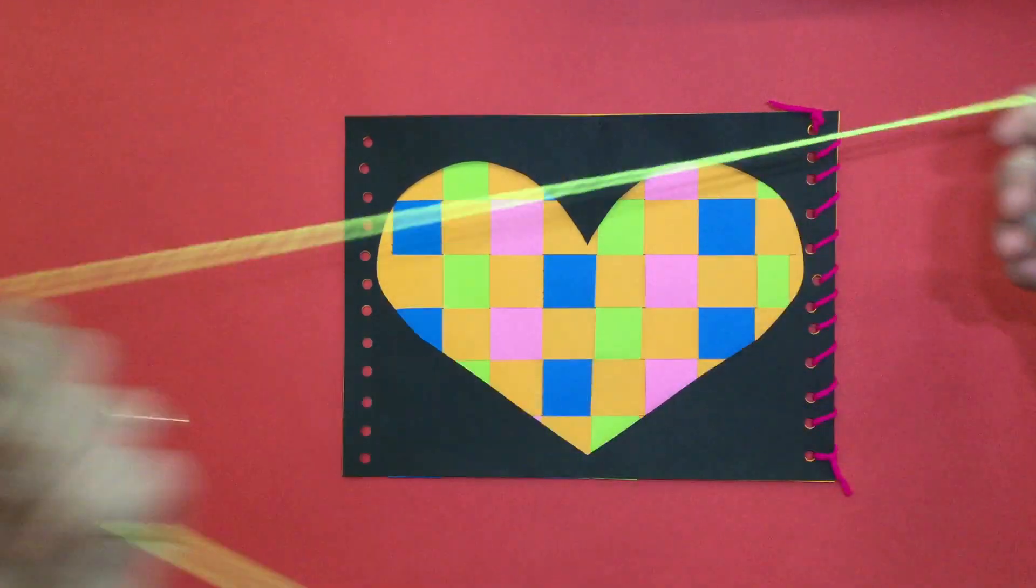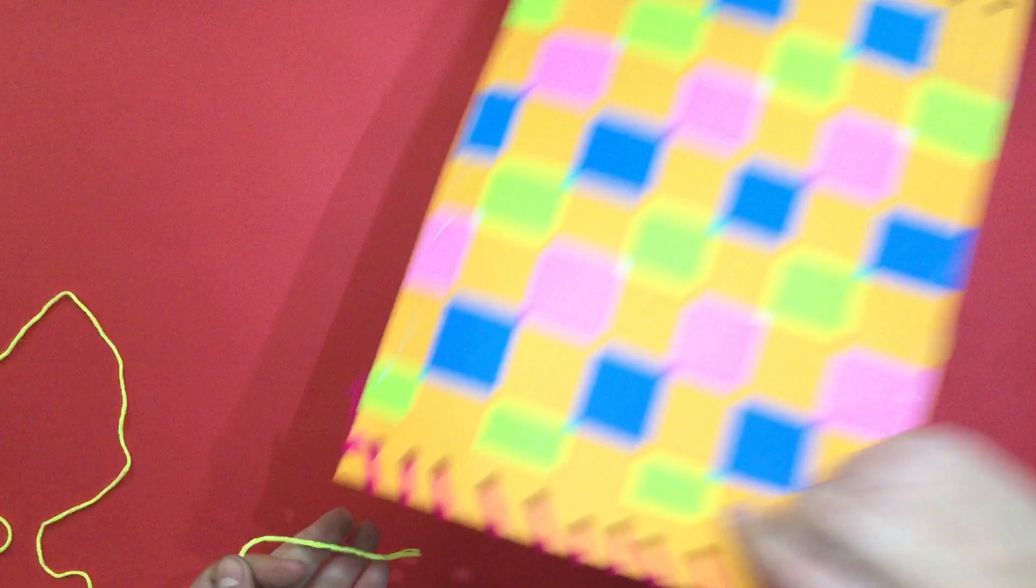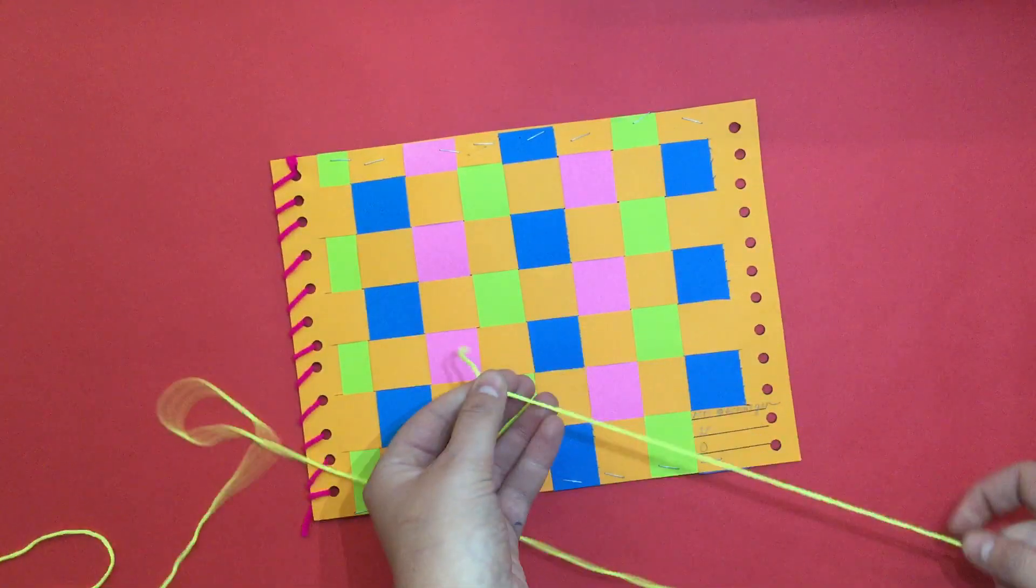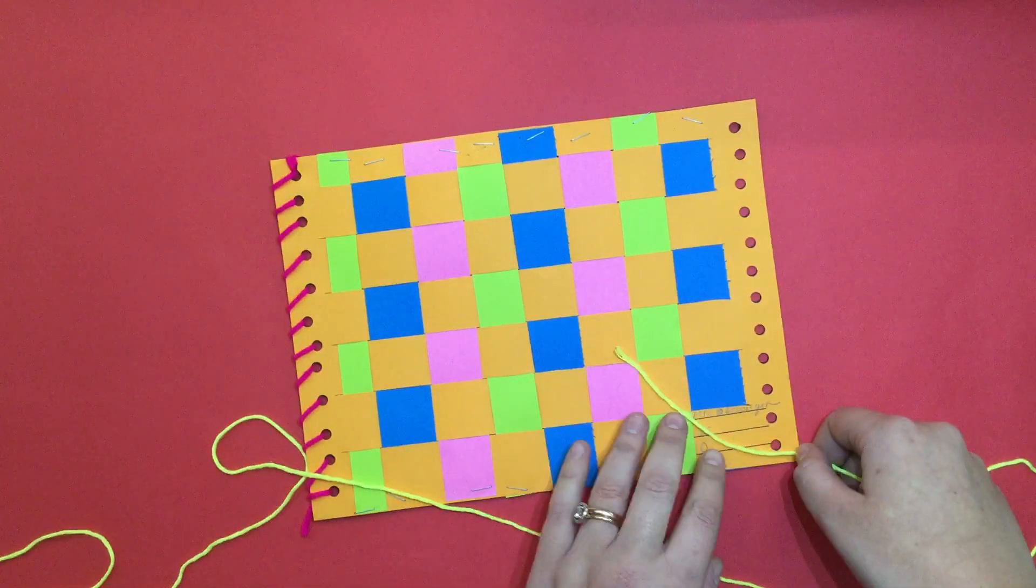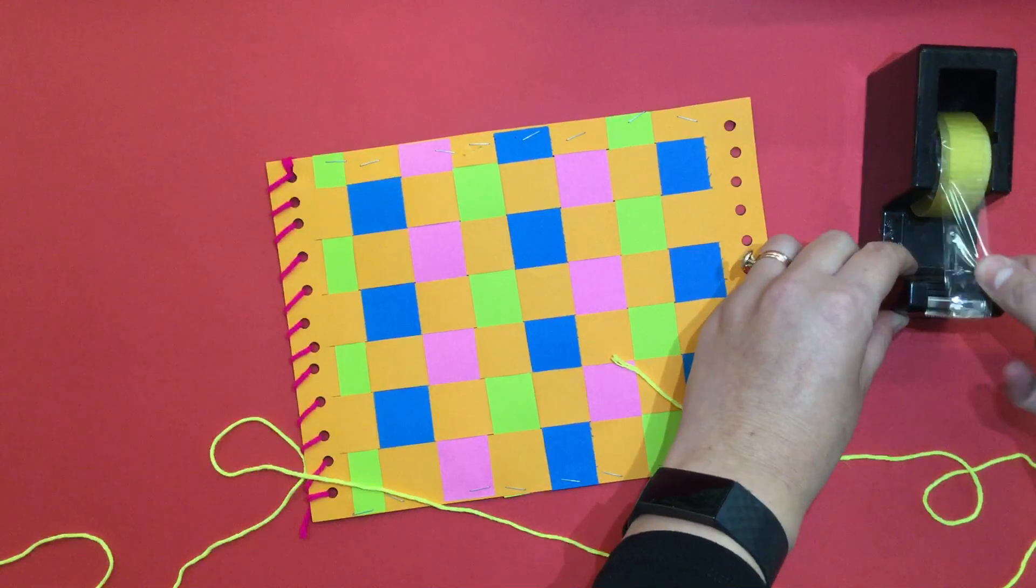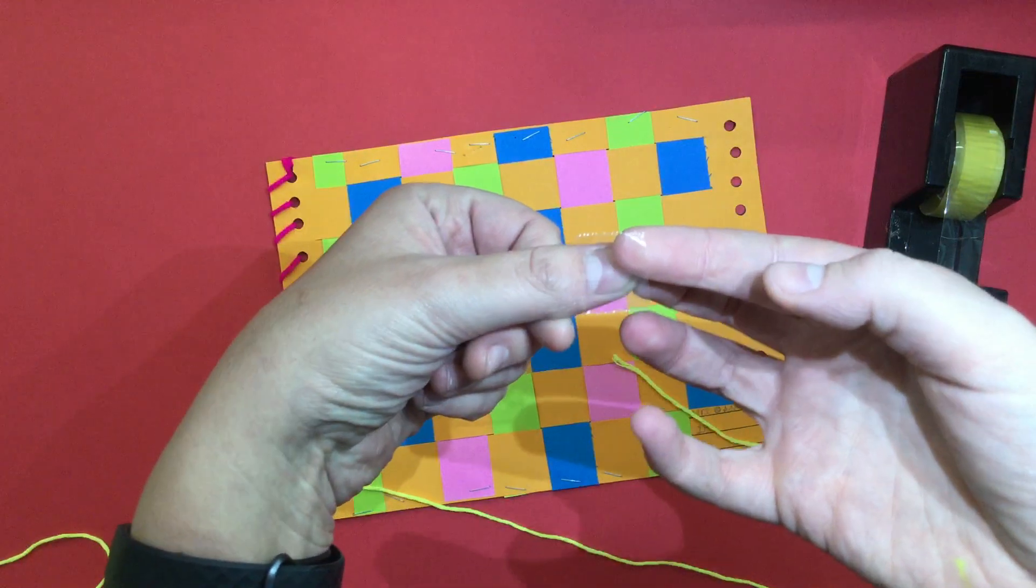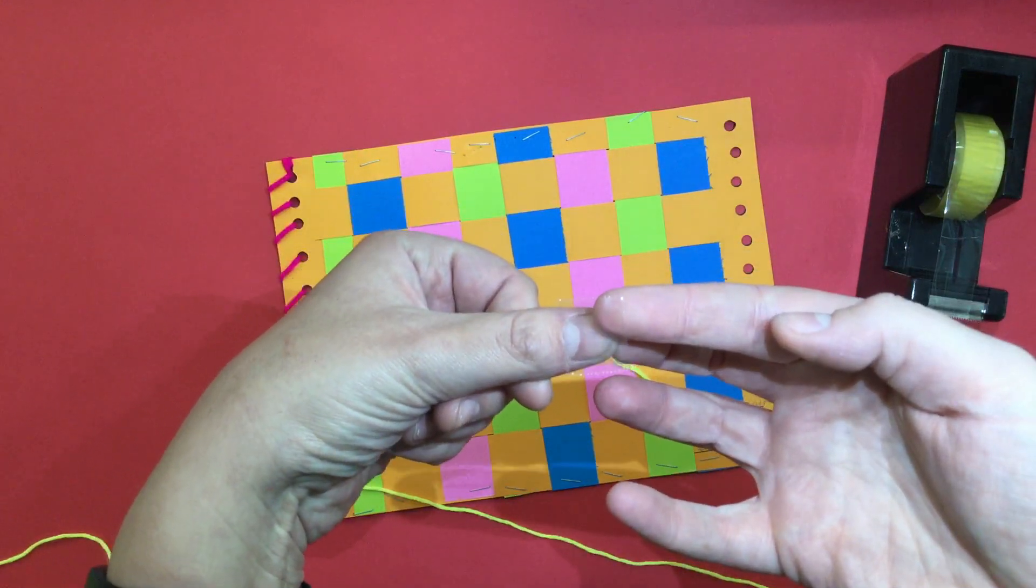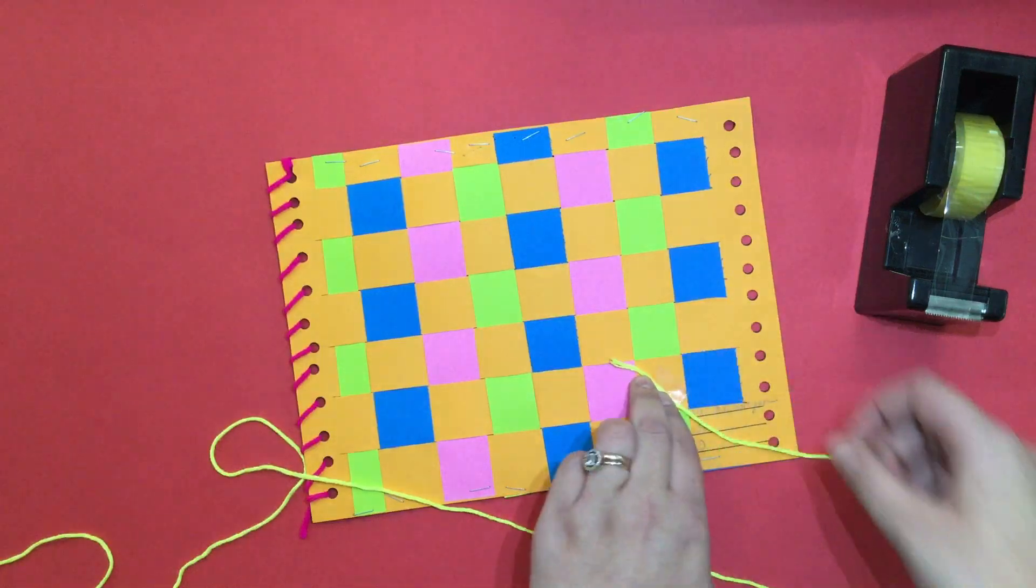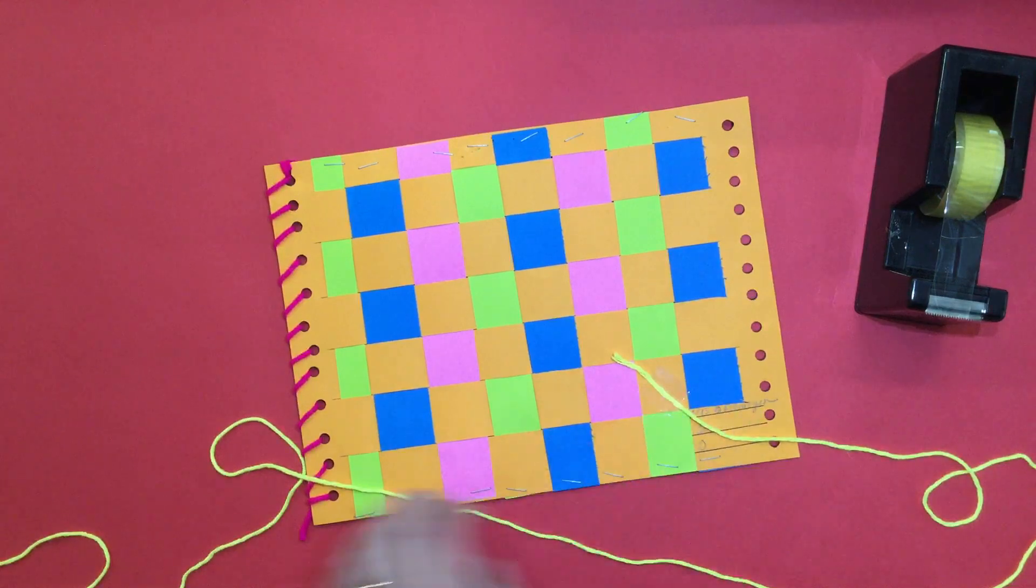In your basket you will have pieces of yarn. I'd like you to take one, and on the back of your paper where you're going to start, take one end of the string and a very small piece of tape, about the size of the top of your thumb. You're going to attach that piece of yarn to the back of your paper, just loosely wherever it can fit on the back.